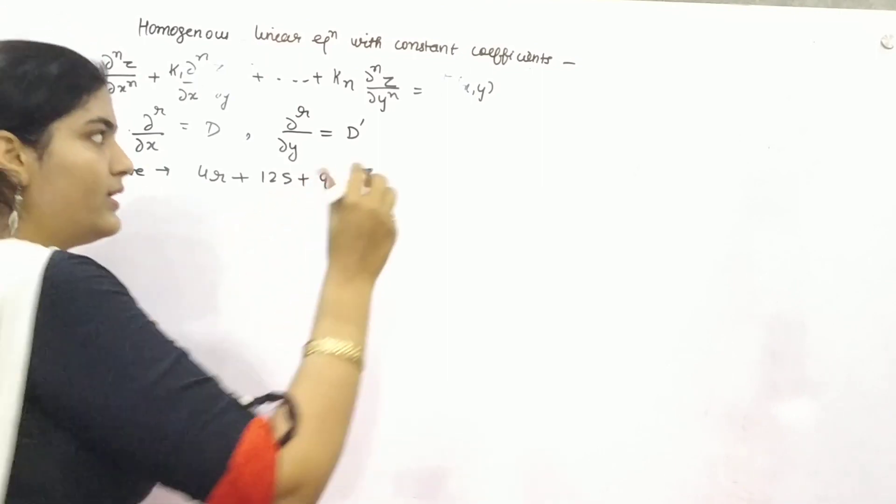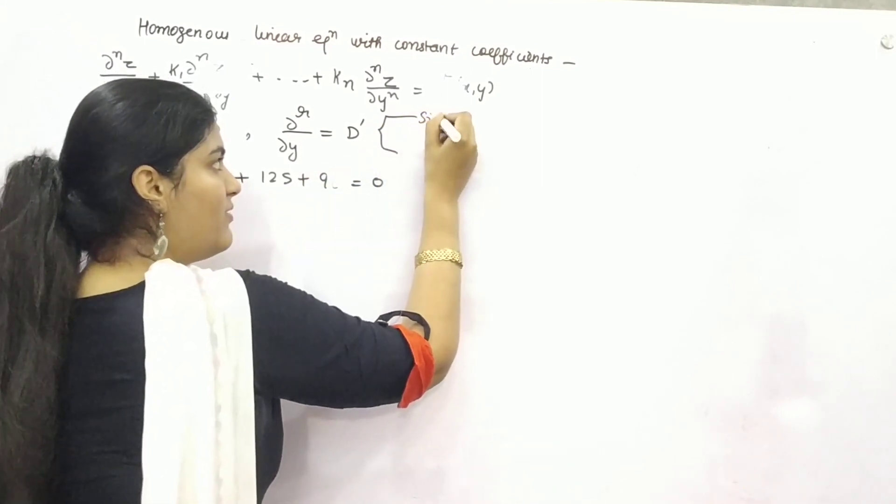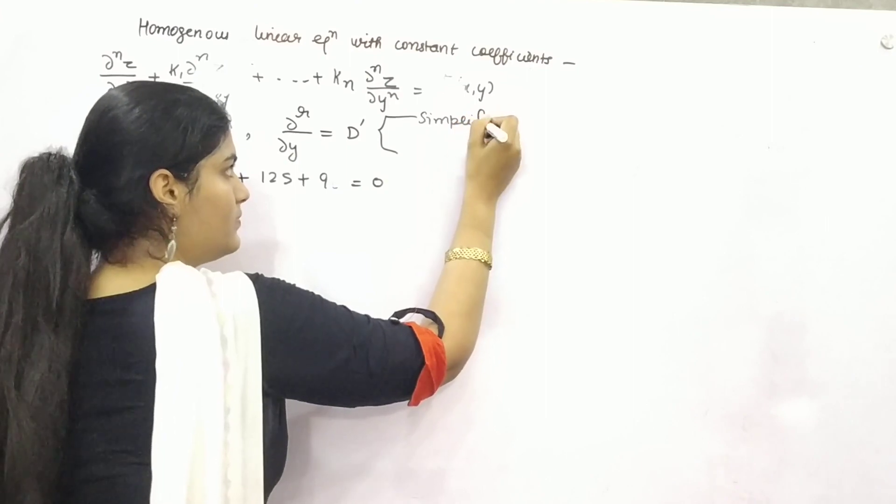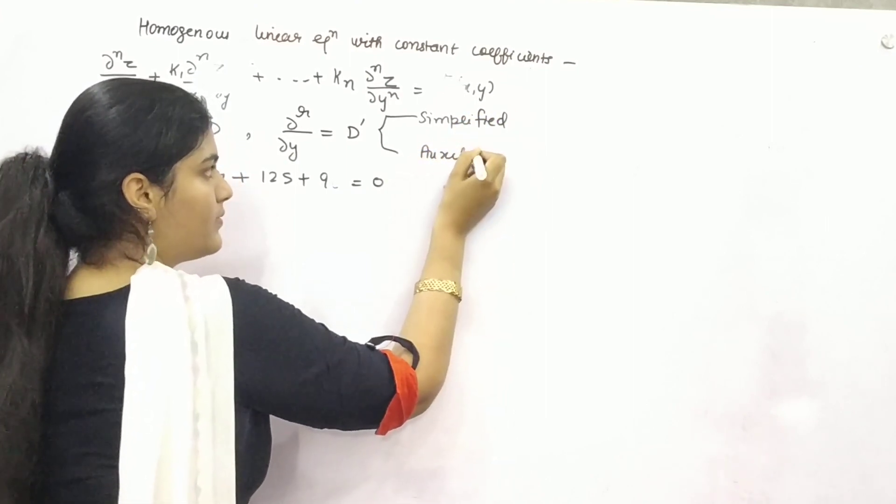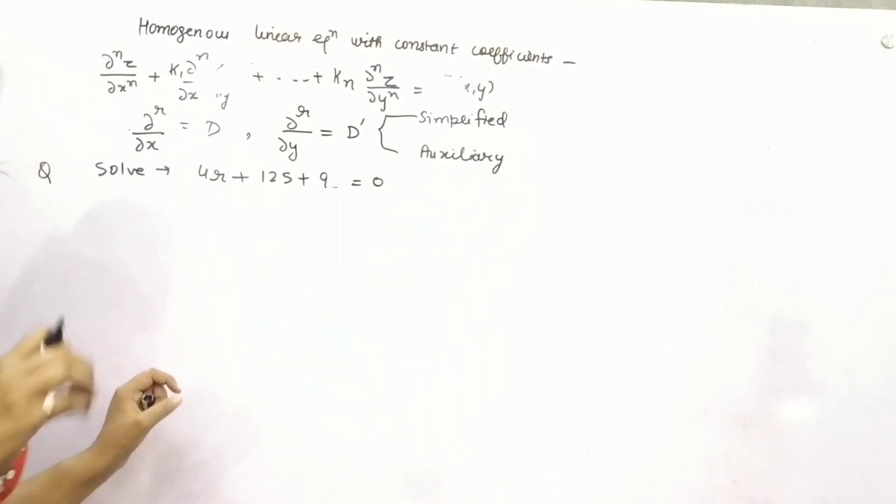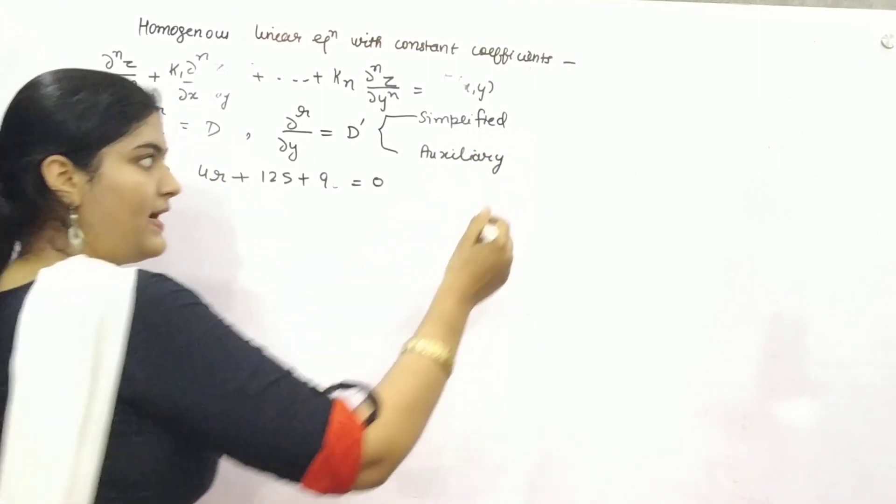You need to form two things. Firstly, simplified form. And secondly, auxiliary equation. Solve the auxiliary equation and find the roots.